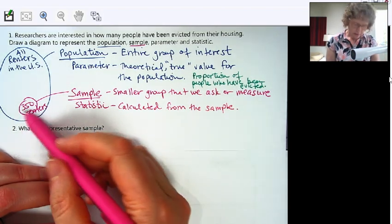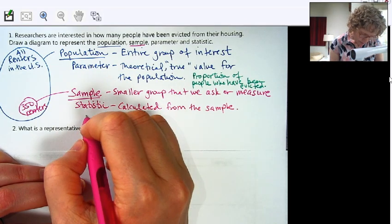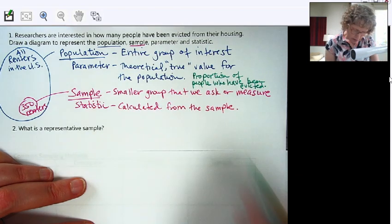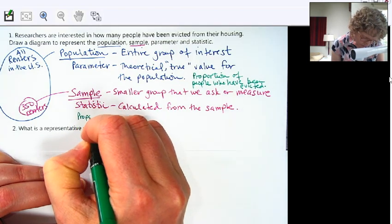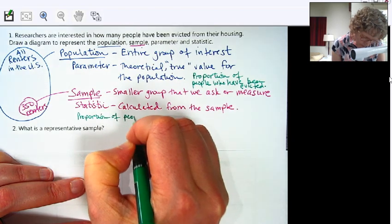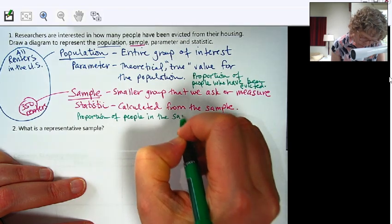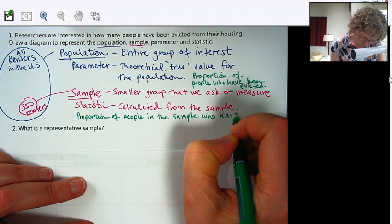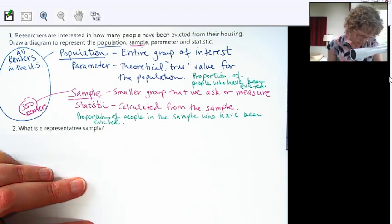So in this case, I'll keep this example going, and we can calculate it. So this would be, instead of the proportion who have been evicted from our population, this would be the proportion of people in the sample who have been evicted.